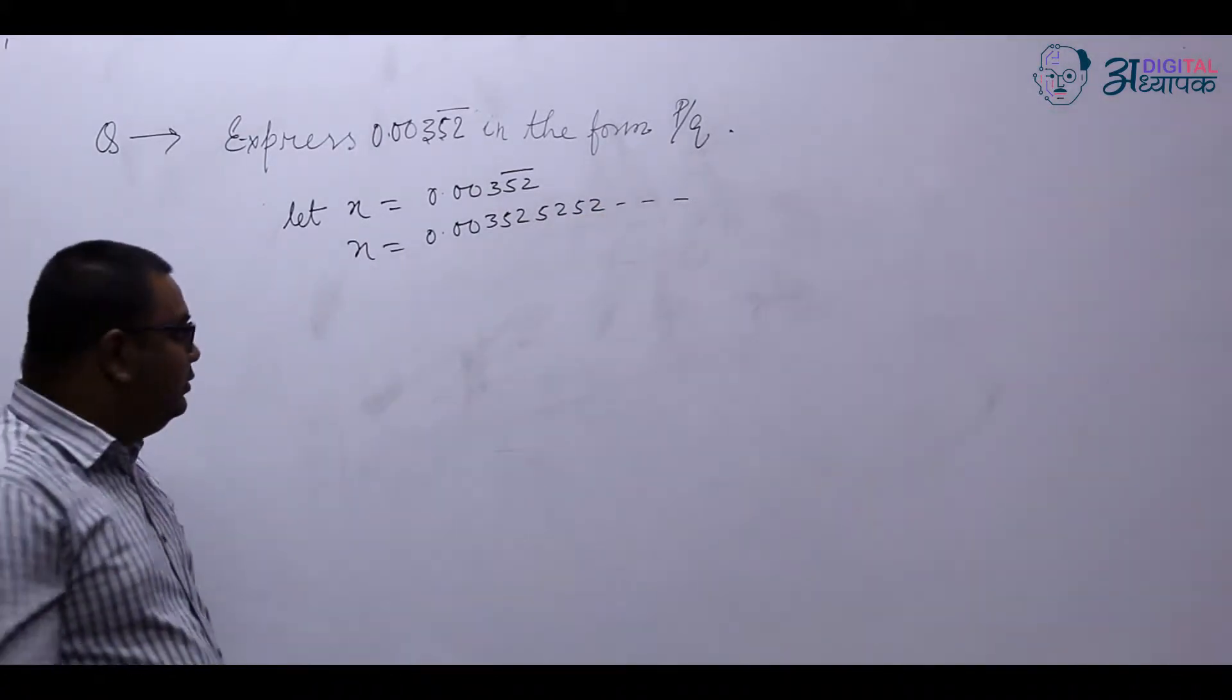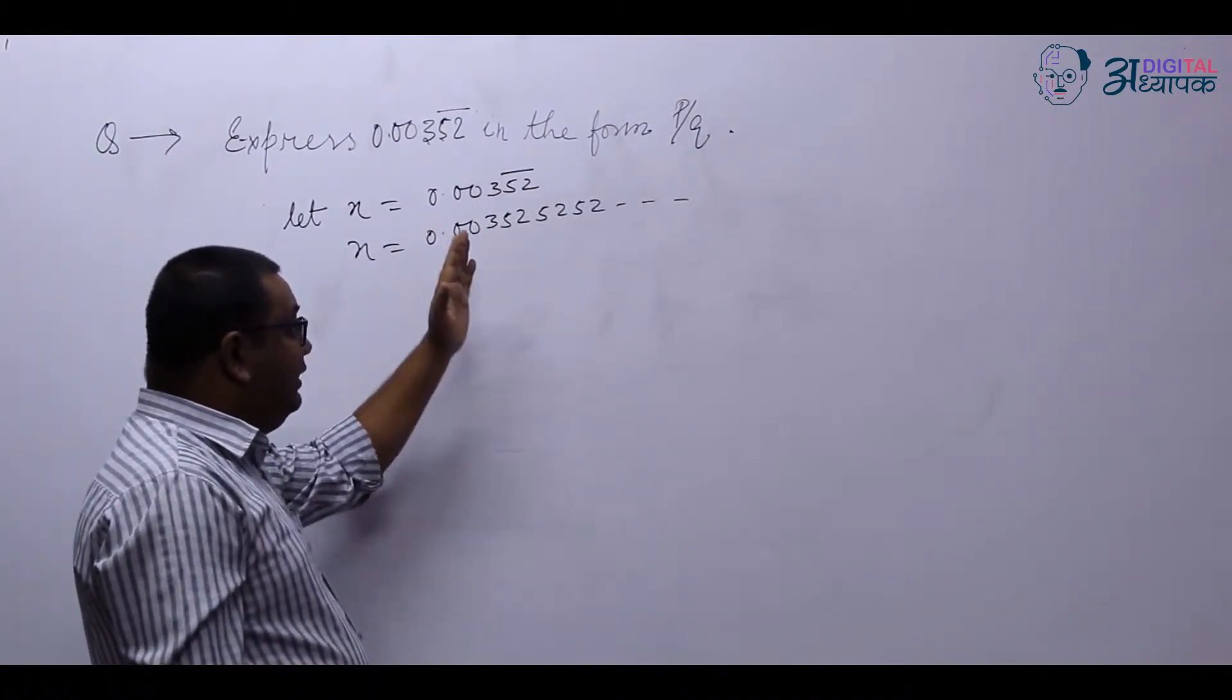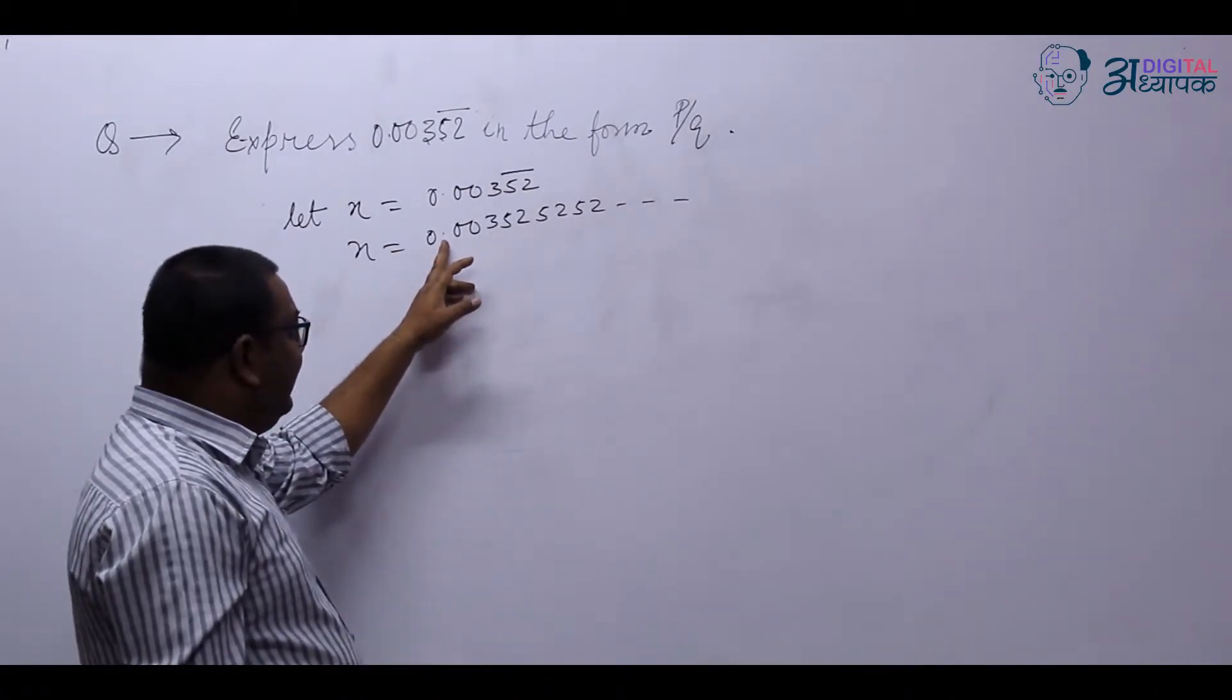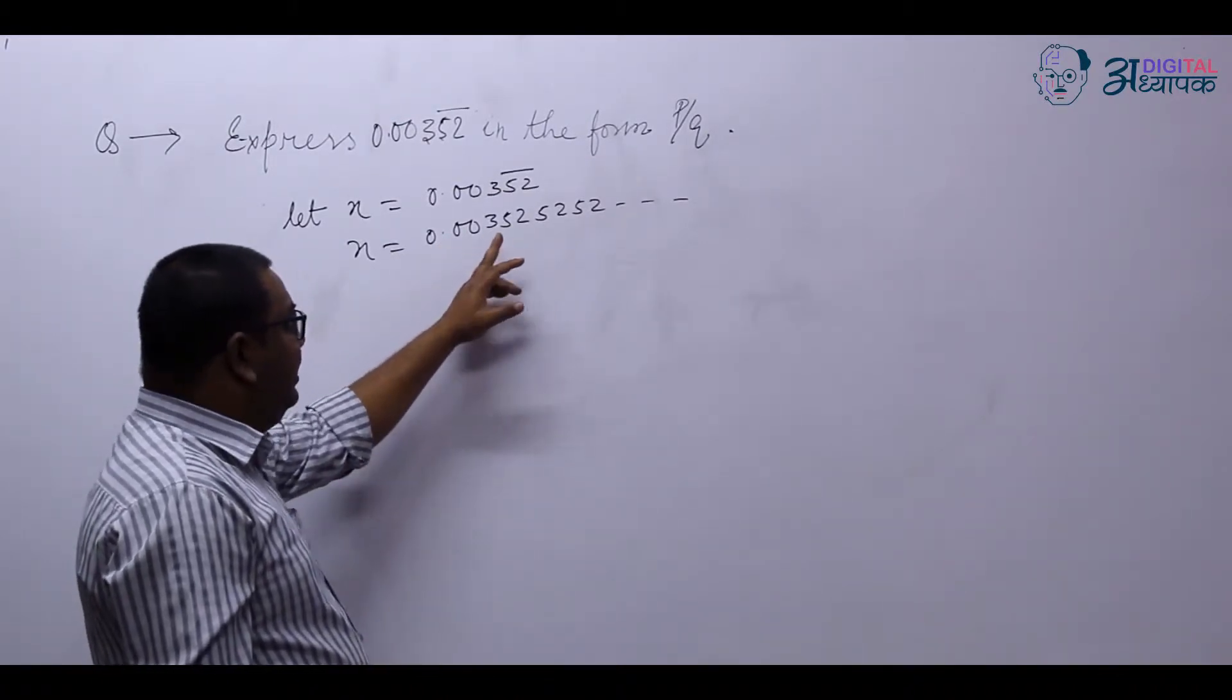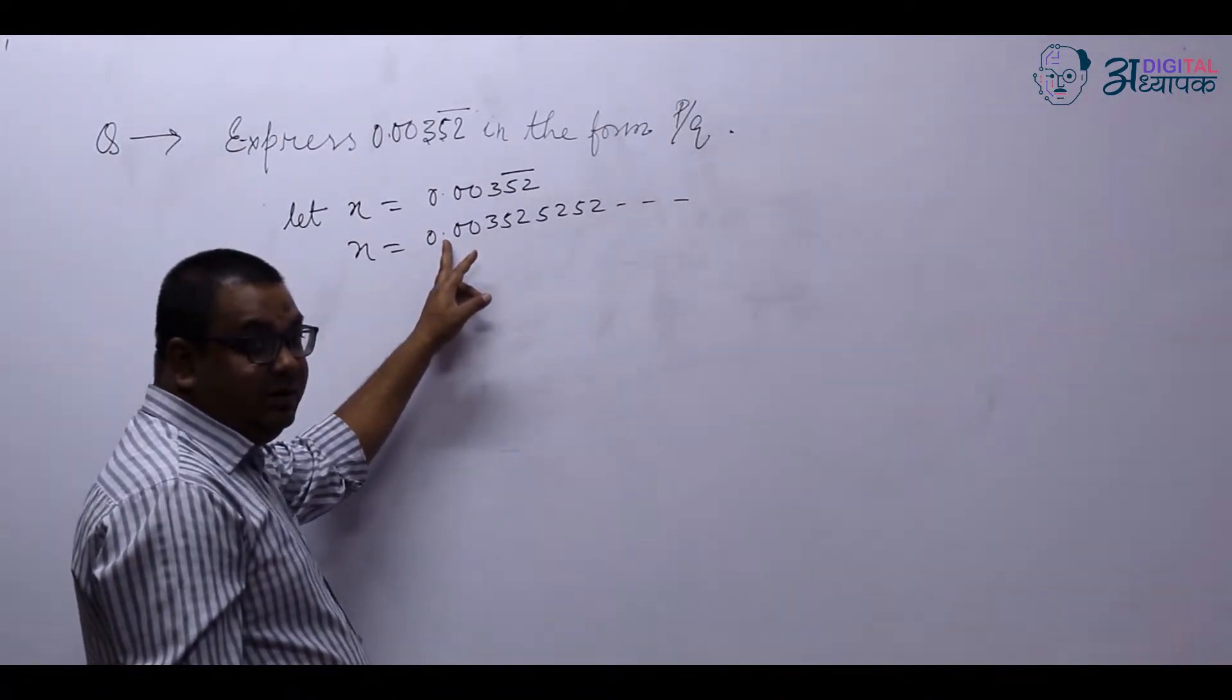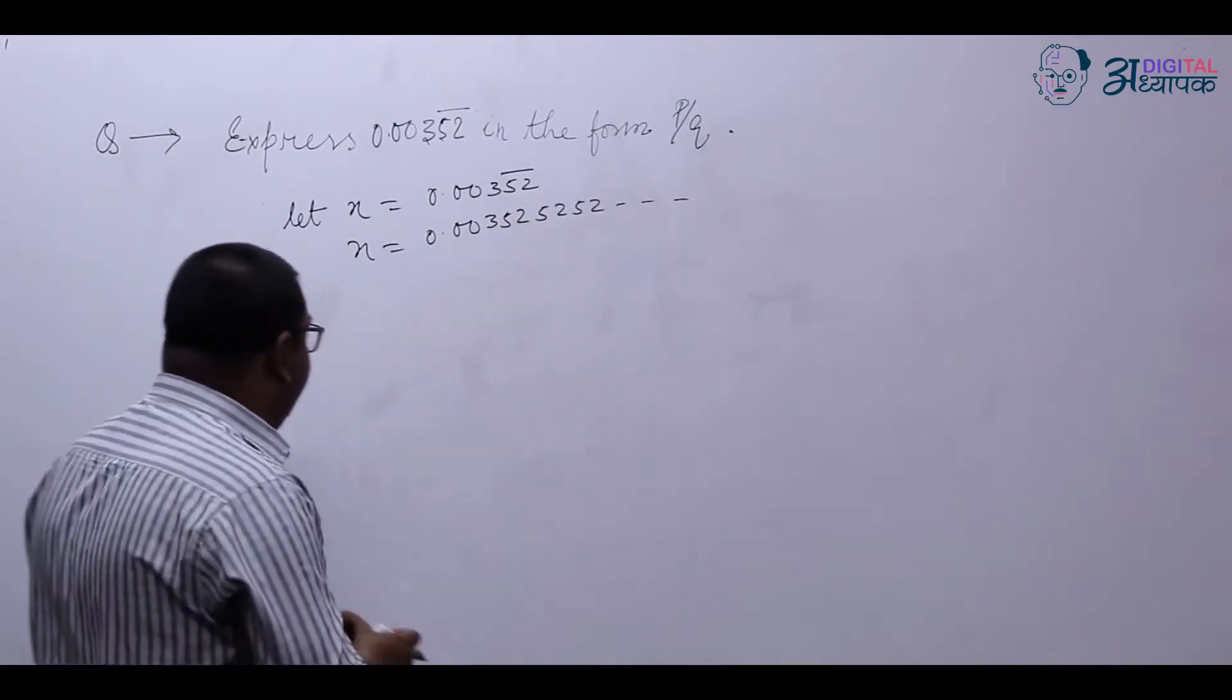First we have to shift the decimal place to a place till where there is no repetition. That means we have to shift this decimal after 3, and then we have to shift this decimal place after the numbers which are repeating, that is after 52.